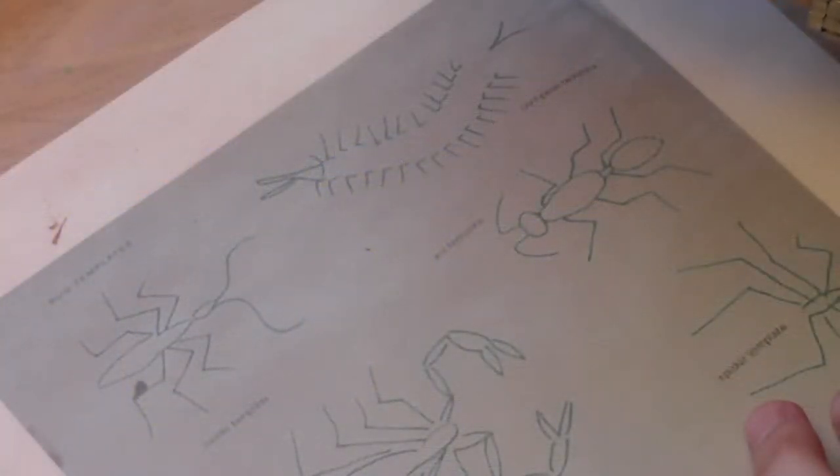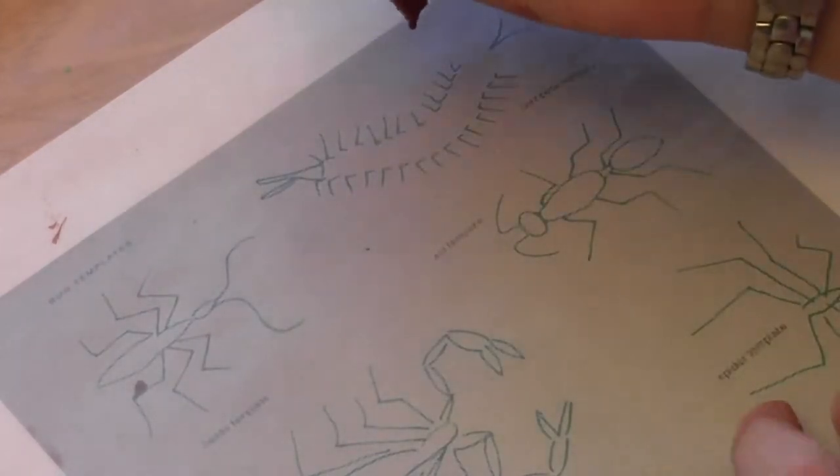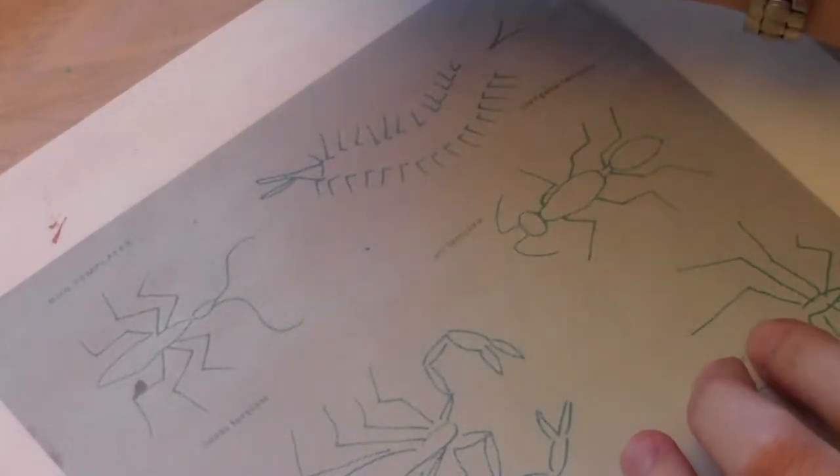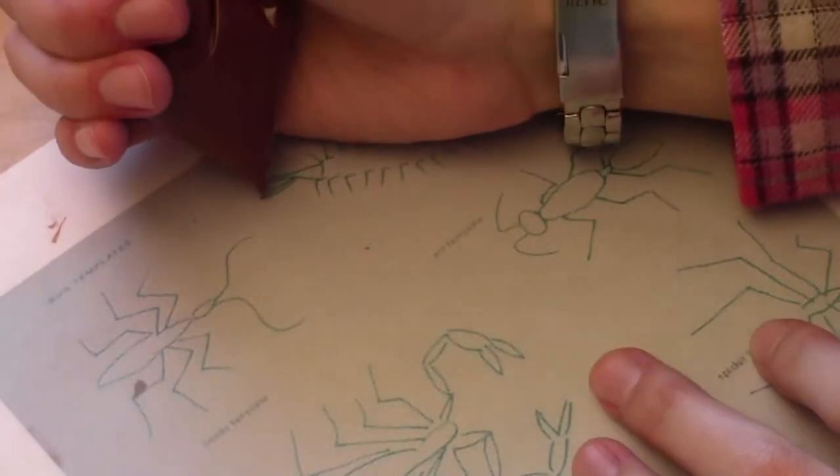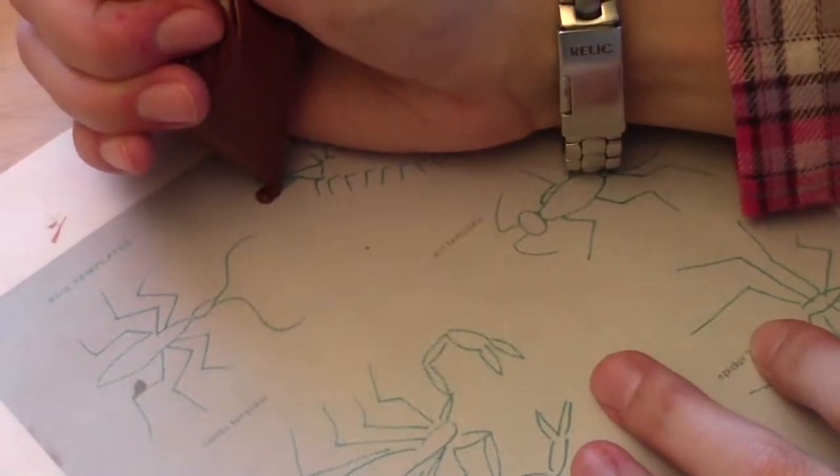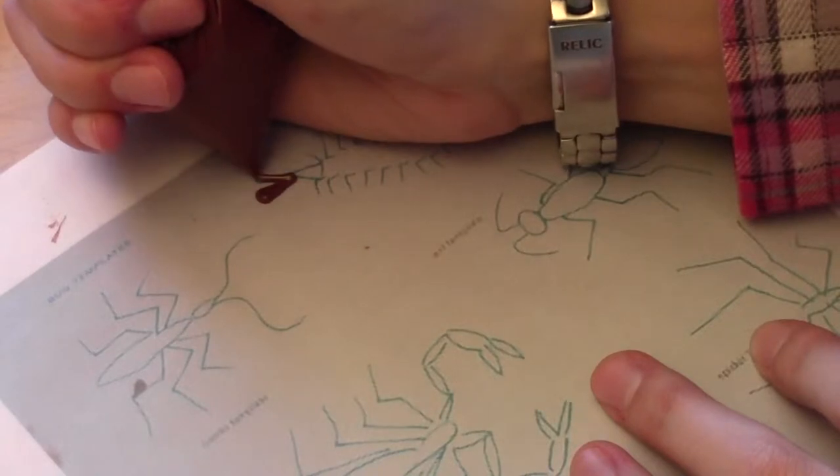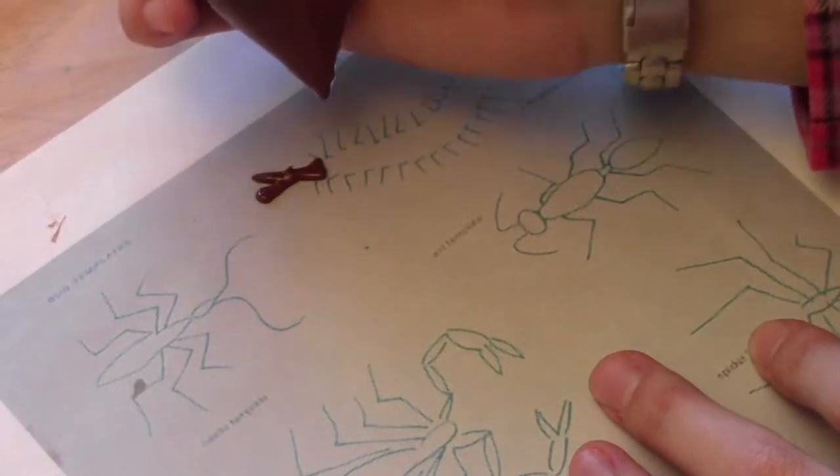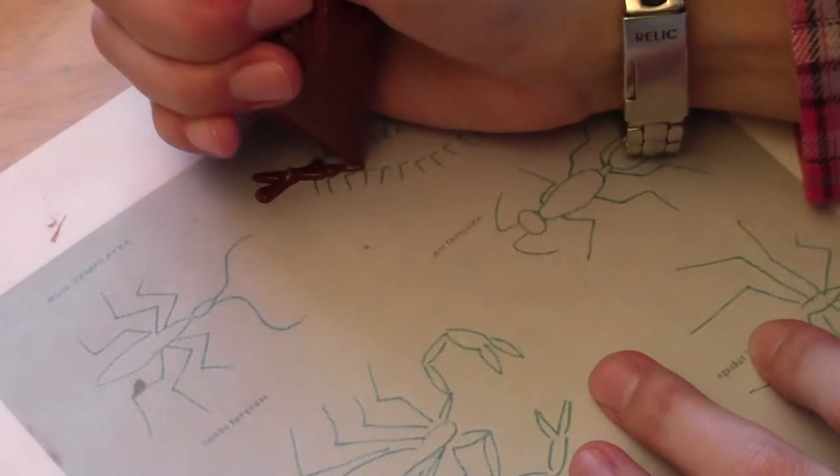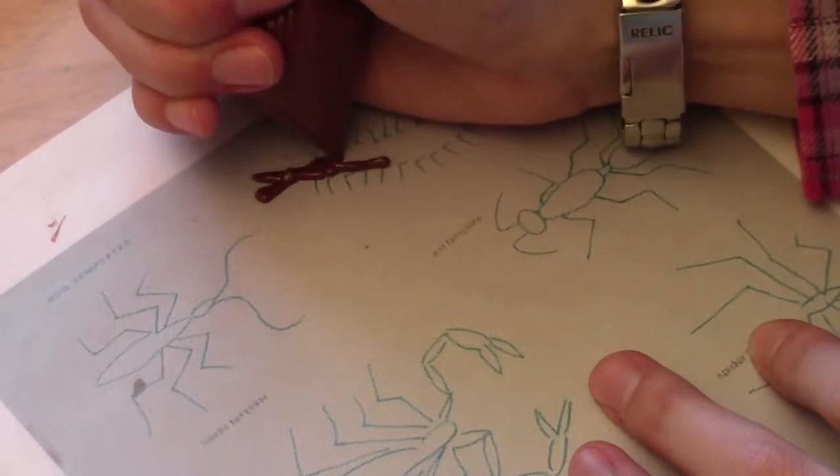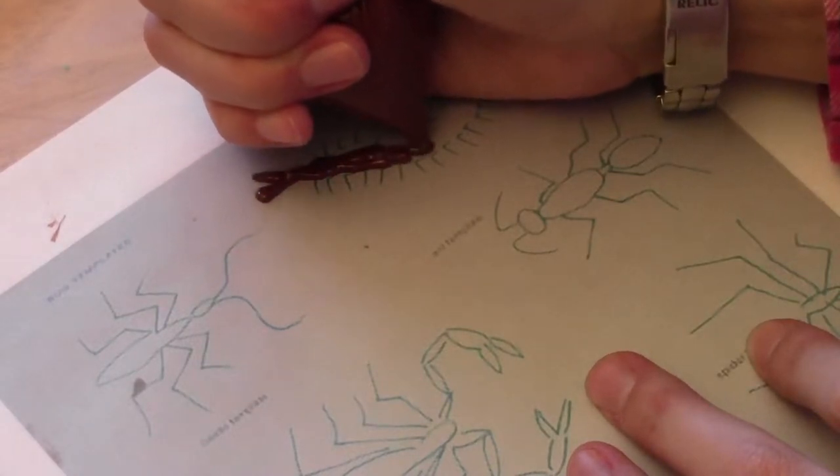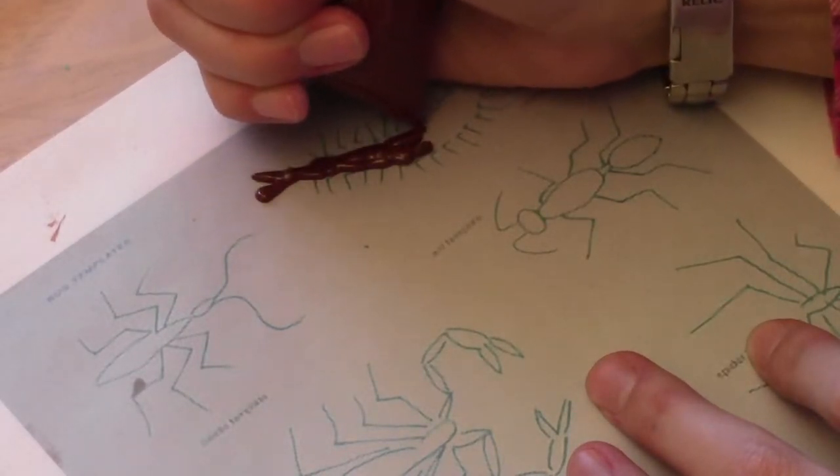So to make the bugs we're going to start with the centipede. We have a template underneath some wax paper and I'm just going to outline it and then we're going to put some M&Ms on it to give it some character. So starting up here at the head, I'm just going to go along, filling in the body, which is where the M&Ms will be stuck to.